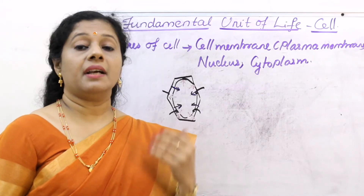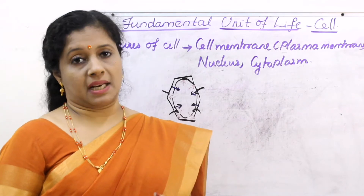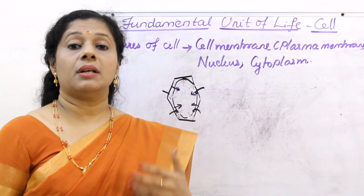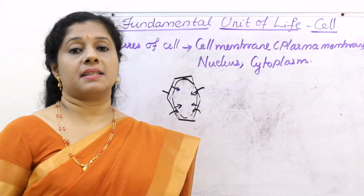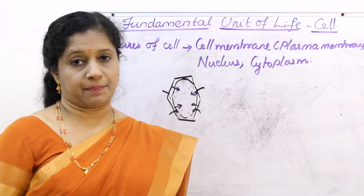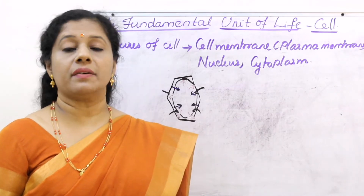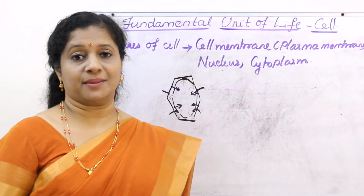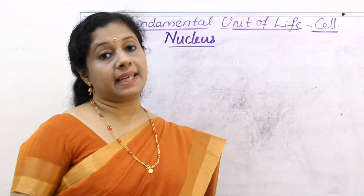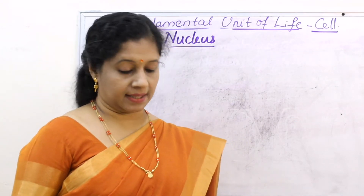Cell wall also gives rigidity to the plant cell and protects it, giving it a definite shape. These are the functions of cell wall. Let us now move on to the next part of the cell, that is the nucleus.